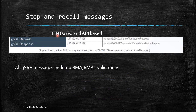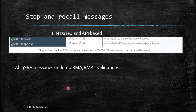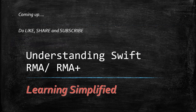Apart from FIN messages such as MT192, MT199, MT196, stop and recall can also be done via API-based messages — specifically camt.A006 and camt.A007 — as well as through a GUI-based method. An API is also available to enquire on payment status. It should be noted that all GSRP messages undergo Relationship Management Application (RMA) validations. In the next session we will cover Swift RMA and RMA Plus. Thank you.